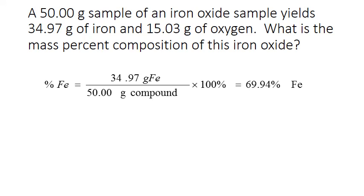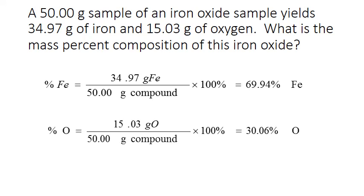We do the same thing for oxygen, except using the mass of oxygen. So 15.03 grams of oxygen divided by the total mass of our sample, that beginning mass of 50 grams, multiplied by 100 gives us 30.06 percent. Hopefully you notice that both of these numbers add up to 100, which is exactly what you would expect considering there are only two elements in this particular compound.